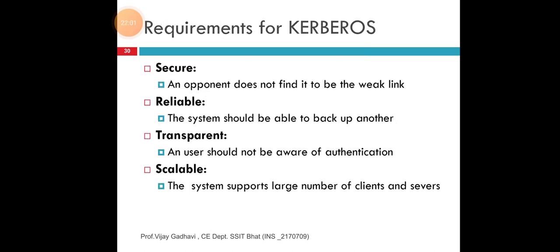Requirements of Kerberos: secure, reliable, transparent, and scalable. Why secure? Because the opponent does not find it to be the weak link. Reliable — because it should be able to back up another. Transparent — because users need not be aware of authentication. Scalable — the system supports a large number of clients and servers. In Kerberos, you need to first remember that it is a computer network authentication protocol that works on the basis of tickets to allow nodes communicating over a non-secure network to prove their identity to one another in a secure manner. This is the main use of Kerberos.